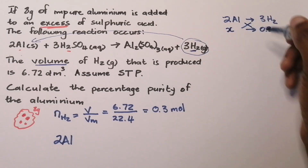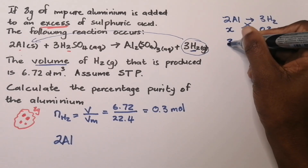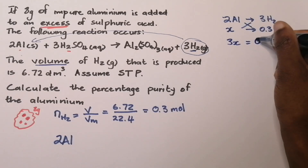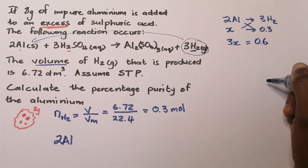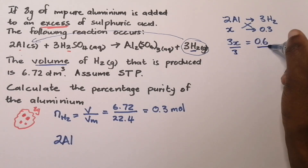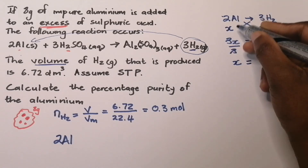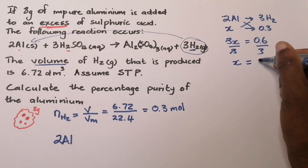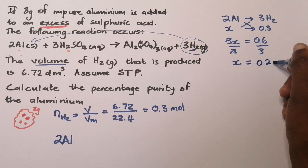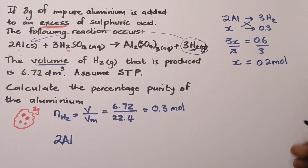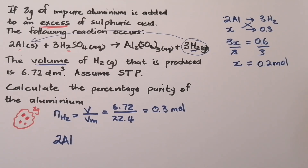Cross-multiplying: 3x = 2 × 0.3 = 0.6. Dividing both sides by three, x — the number of moles of aluminium — equals 0.2 moles. So the number of moles of aluminium that actually reacted was 0.2 moles.